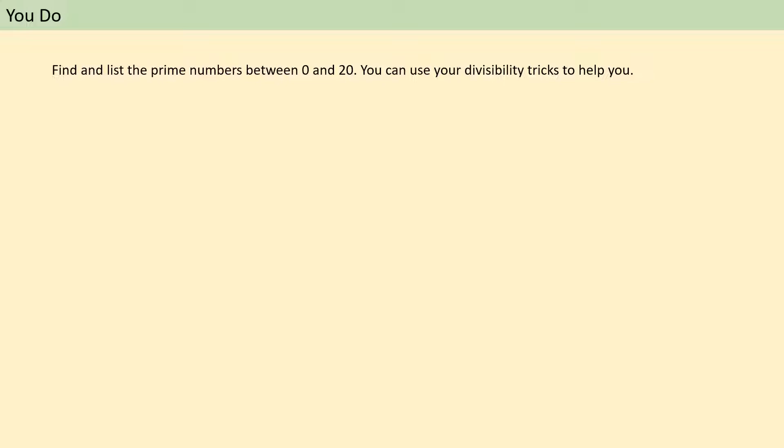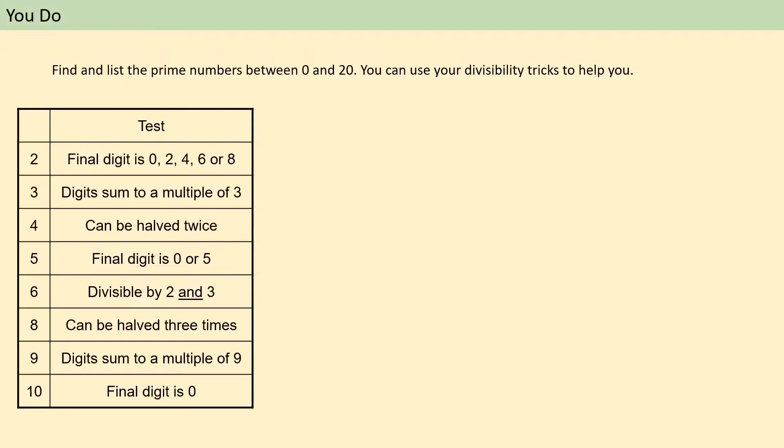Okay, if you wanted some hints just to remind yourself of the divisibility tricks because you can't find your notes on it. There you go. These are how we find things that are divisible by each of these numbers. Remember that you've also got to test if things can divide by seven. There's no trick for that. You just need to make sure that sevens are also covered. Okay, and hopefully at this point we've now all had a go at finding all of the prime numbers between 0 and 20.